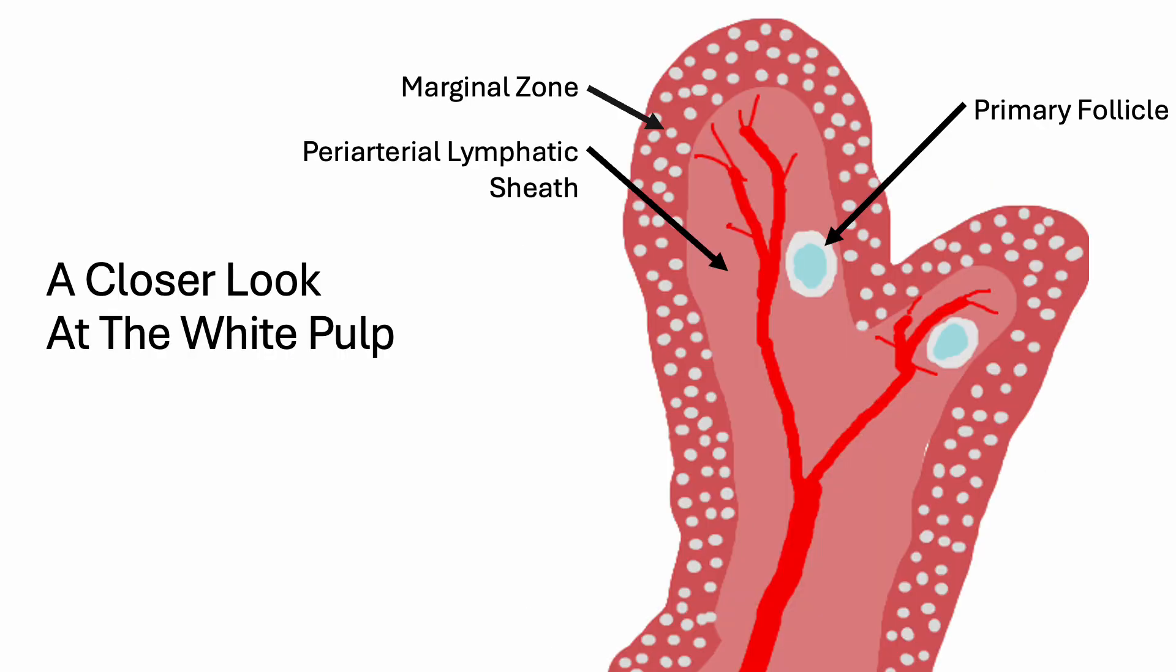Here's a closer look at the white pulp. It only accounts for about 25% of the spleen, but a lot happens here. This is where the blood meets the adaptive immune system. B and T cell activation occurs here. The periarterial lymphatic sheath is composed of macrophages and T cells. The marginal zone contains macrophages and follicles. The follicles contain the naive B cells that need to be challenged by an antigen so they can then have something to attack.